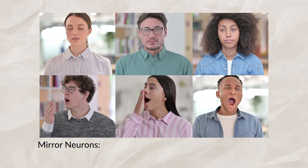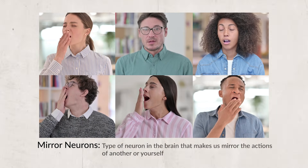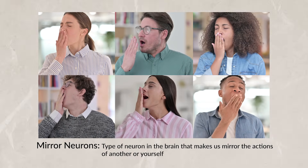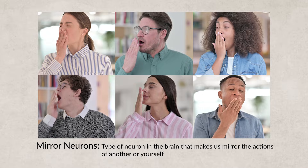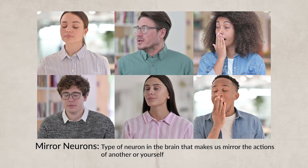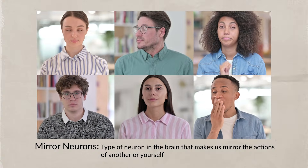We also have mirror neurons. These neurons are why when someone yawns, you might start to yawn. These neurons mimic — they react to the actions of another or ourselves. Now, in order for neurons to send a message, they need to receive enough stimulation to cause an action potential.